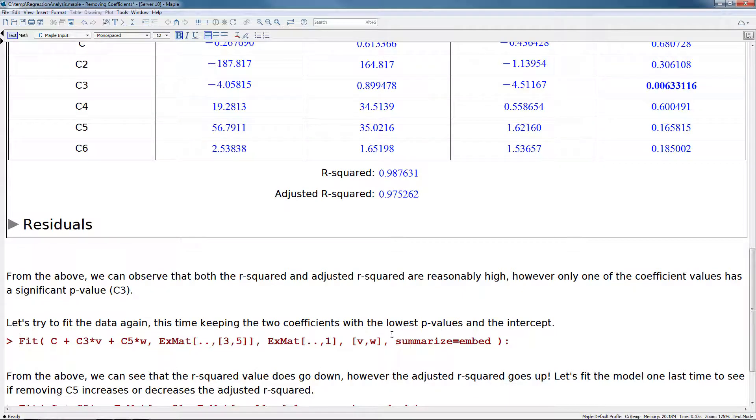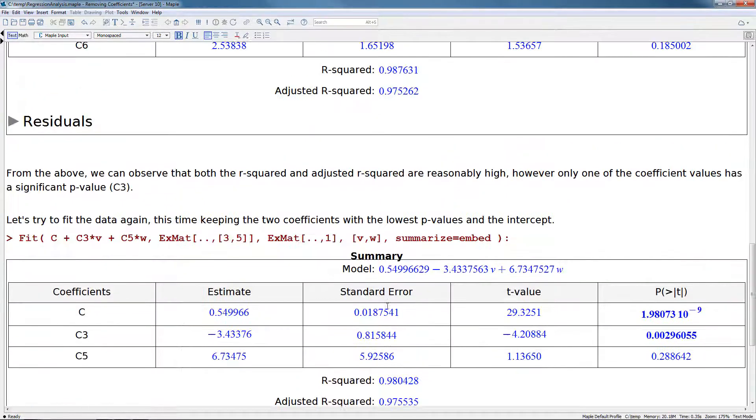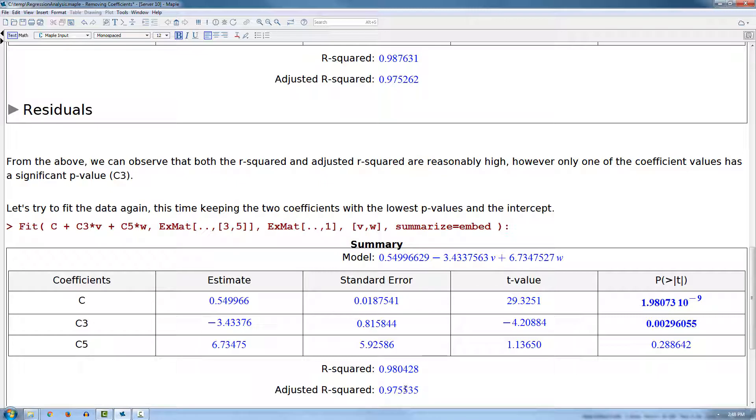So we'll again try to fit this data. And all the options are the same as before, but now we're just using two coefficients. Now we can see that the intercept and the C3 coefficients are still significant. The C5 value does not give us a very good P value here. But what we can notice is the adjusted R squared, if we go back up here, actually has gone up in between these two tests. So here we have a better adjusted R squared value than we had before.